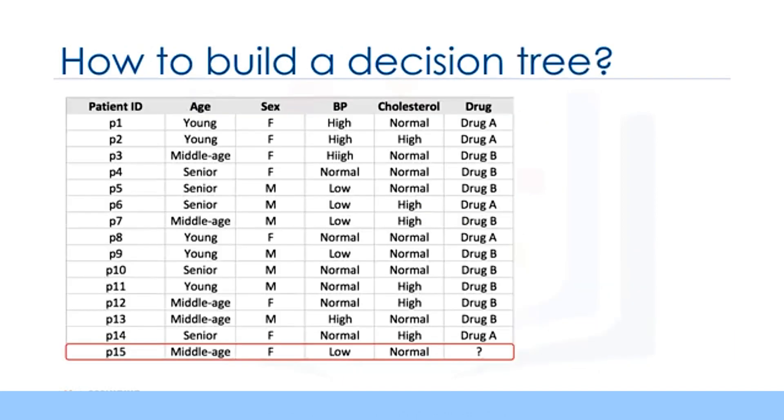Imagine that you're a medical researcher compiling data for a study. You've already collected data about a set of patients, all of whom suffered from the same illness. During their course of treatment, each patient responded to one of two medications. We'll call them drug A and drug B. Part of your job is to build a model to find out which drug might be appropriate for a future patient with the same illness.